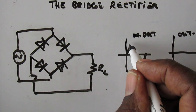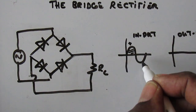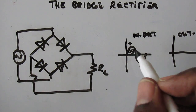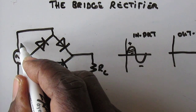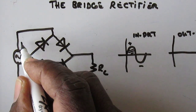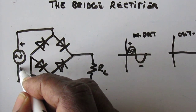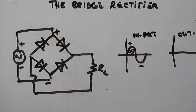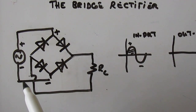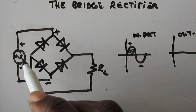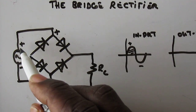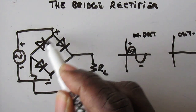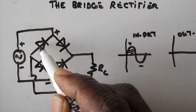The first half cycle is the positive half cycle, and the second will be the negative half cycle. During the positive half cycle, this side of the supply is positive with respect to the other side. Therefore this side is positive and this side is negative.